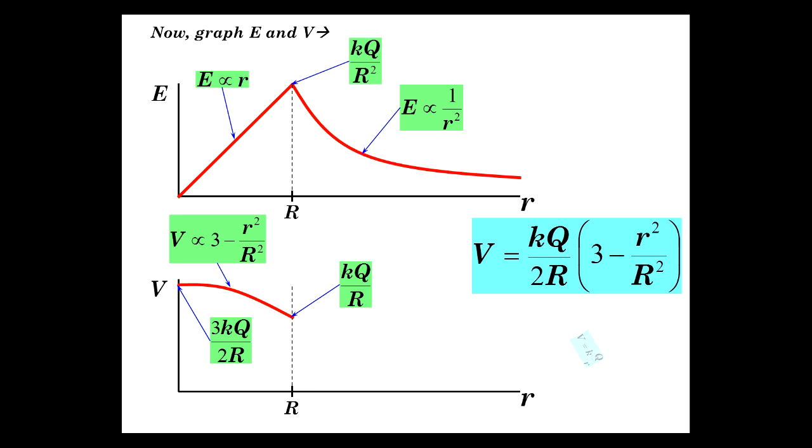And then what does it look like outside? Very simple. Get outside of these charge distributions, if they're a nice sphere at least, it's very easy. KQ over r, proportional to 1 over r. And there is the potential. Electric field and potential for a uniform, non-conducting sphere in all of space.